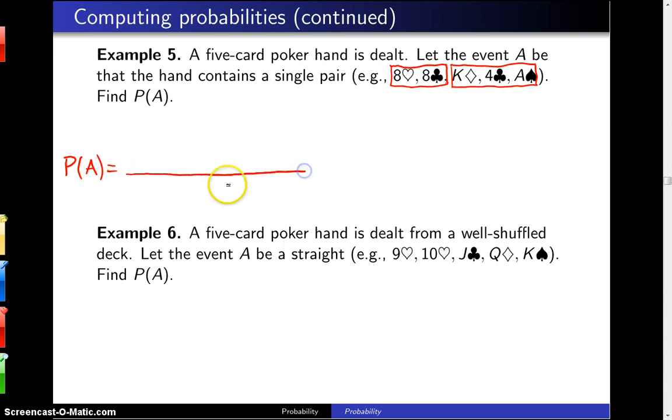Now in the denominator here, we are going to go ahead and write 52 choose 5. And that is the total number of poker hands that can be dealt, five card poker hands that can be dealt from a 52 card deck. The fact that combinations are being used there means that the order that the cards are delivered to the hand is not important. Now that turns out to be 2,598,960 different poker hands.